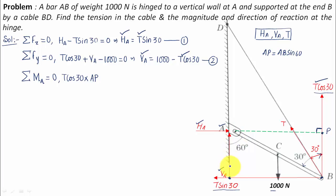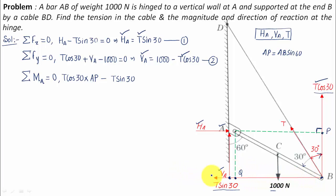Now consider force T sine 30. Using the right-hand rule, this force produces a clockwise moment, which is taken as negative. Dropping a perpendicular from point A to the line of action of this force gives perpendicular distance AQ. From triangle ABQ, with angle 60 degrees at A and total length AB, we get AQ equals AB cos 60. So the moment is negative T sine 30 multiplied by AB cos 60.